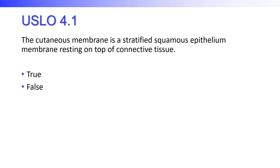The cutaneous membrane is a stratified squamous epithelium membrane resting on top of connective tissue — true or false? The answer is true. The cutaneous membrane is basically your skin, and the outer layer of the skin is made up of stratified squamous epithelial cells.